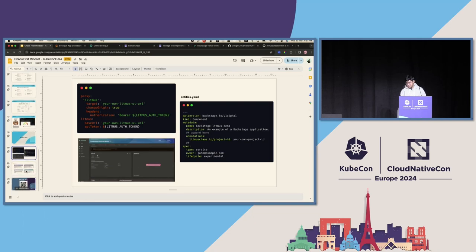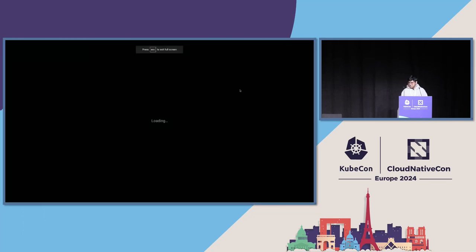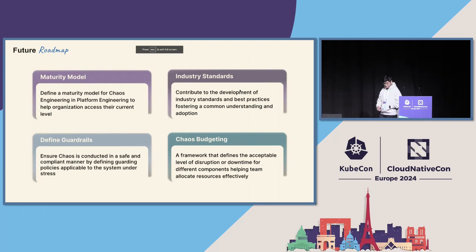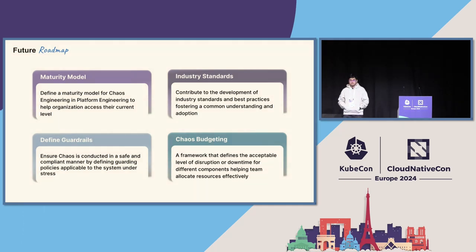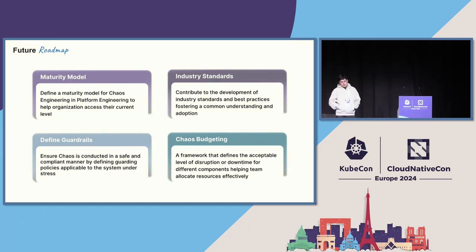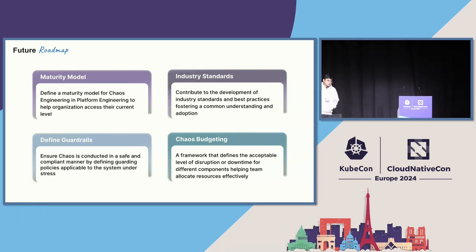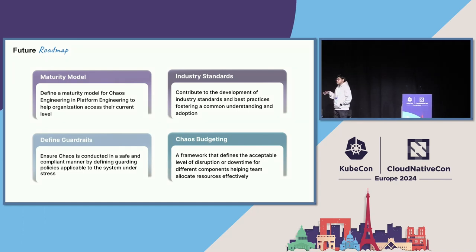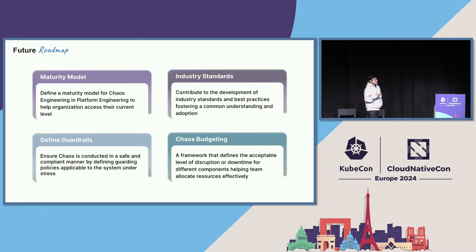What's the roadmap? There are four pillars. First, the maturity model: we need to define a maturity model for chaos engineering in the platform engineering context. It's a relatively newer concept that the community needs to accept before broadly adopting it. Second, industry standards: as a community, we need to contribute to the development of industry standards fostering a chaos-first platform principle and help people understand why this is important.